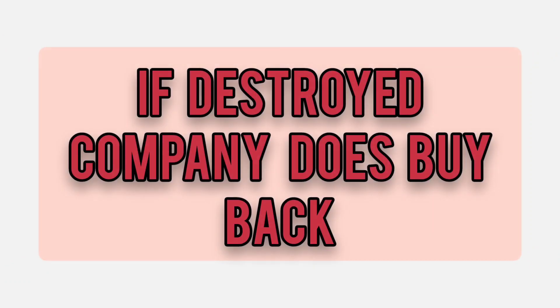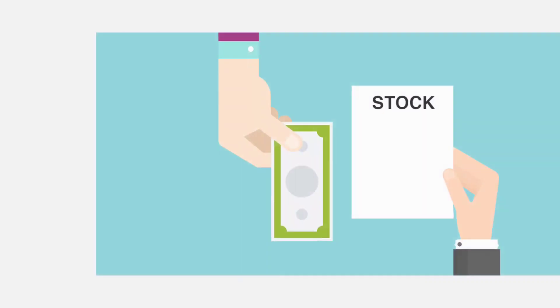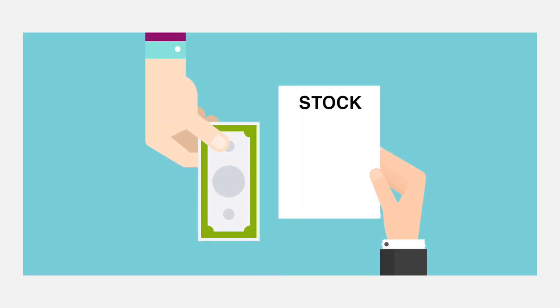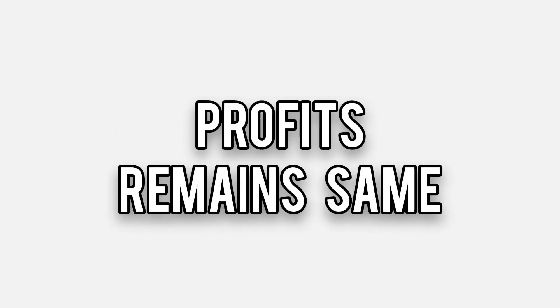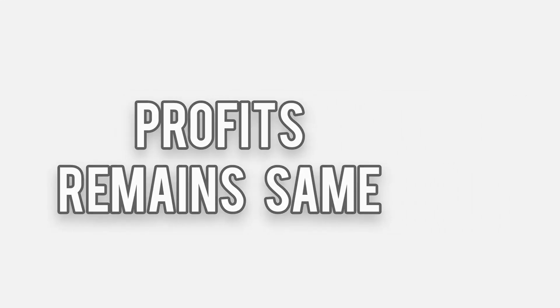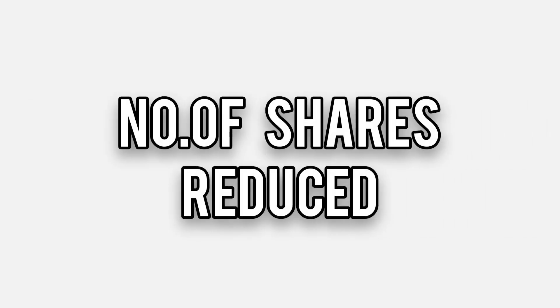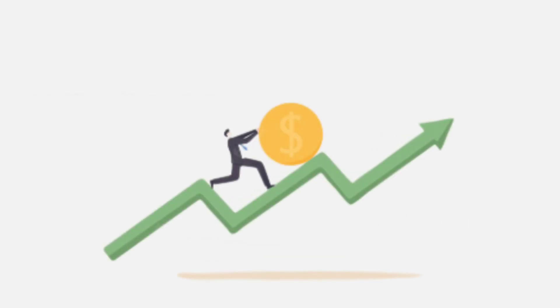One of the most common instances when shares are destroyed is when a company does buybacks. Buyback is a process by which a company buys back some shares from investors in the share markets and destroys them. Since the company's fundamentals remain the same — that is the revenues, profits, etc. — and the total number of shares has reduced, the price per share usually goes up.